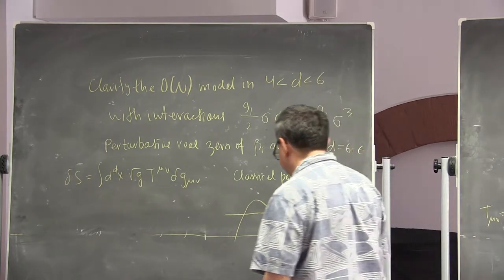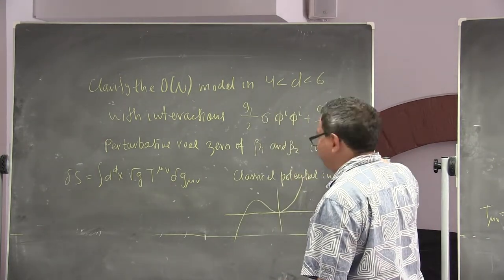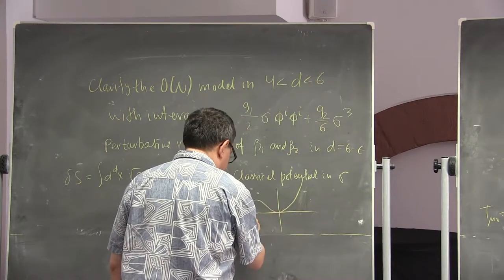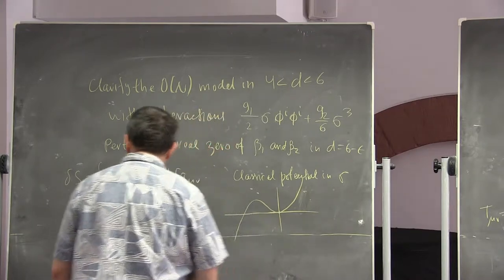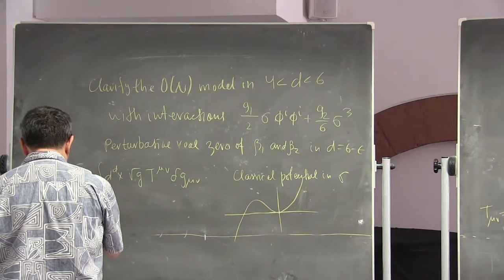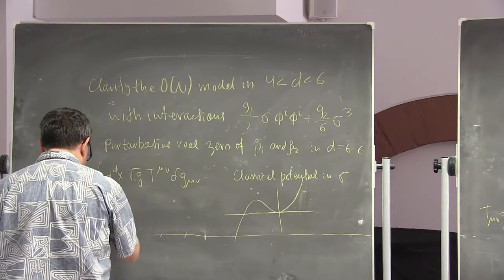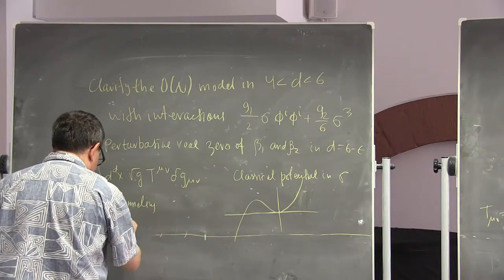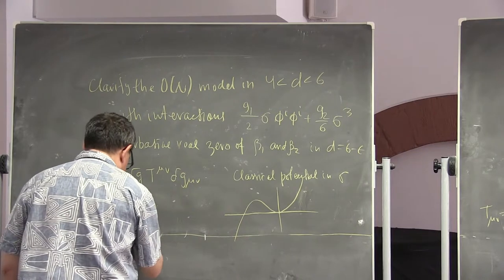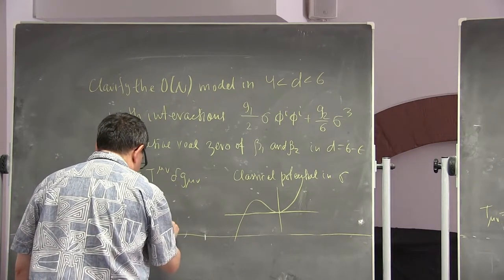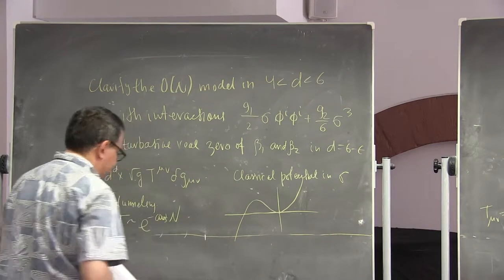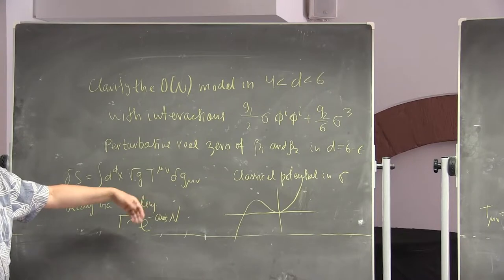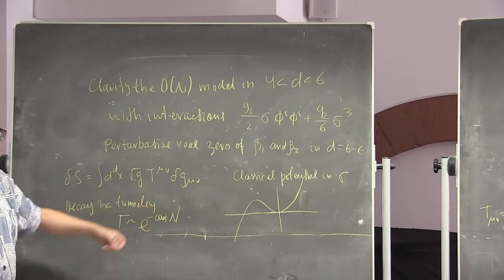The instability means you're fine working in this perturbative vacuum, and the problem is just tunneling from here to the other vacuum. The decay rate turns out to be of order e^{−c·N} — not just suppressed by 1/N, but exponentially suppressed in N.